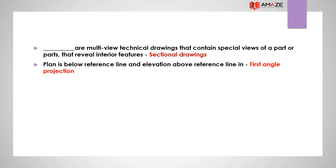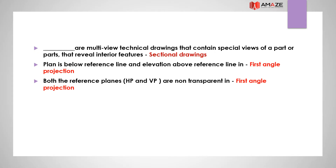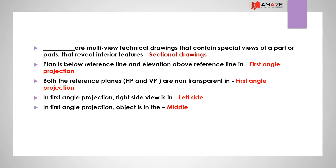In first angle projection, the plan is below the reference line and the elevation is above the reference line. Both reference planes — HP (horizontal plane) and VP (vertical plane) — are opaque in first angle projection. The right side view appears on the left side, the object is considered to be in the middle, and first angle projection is adopted in India.